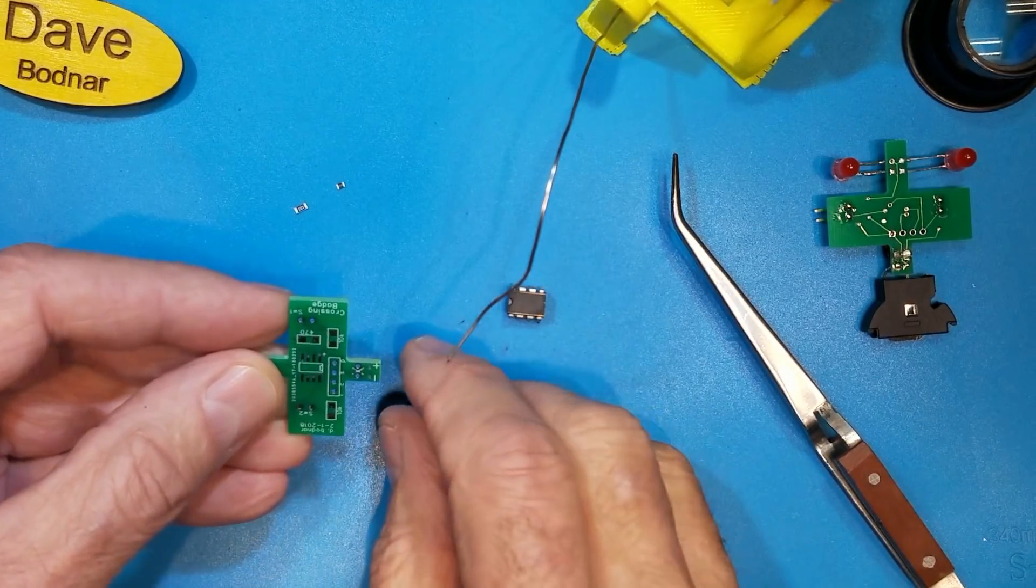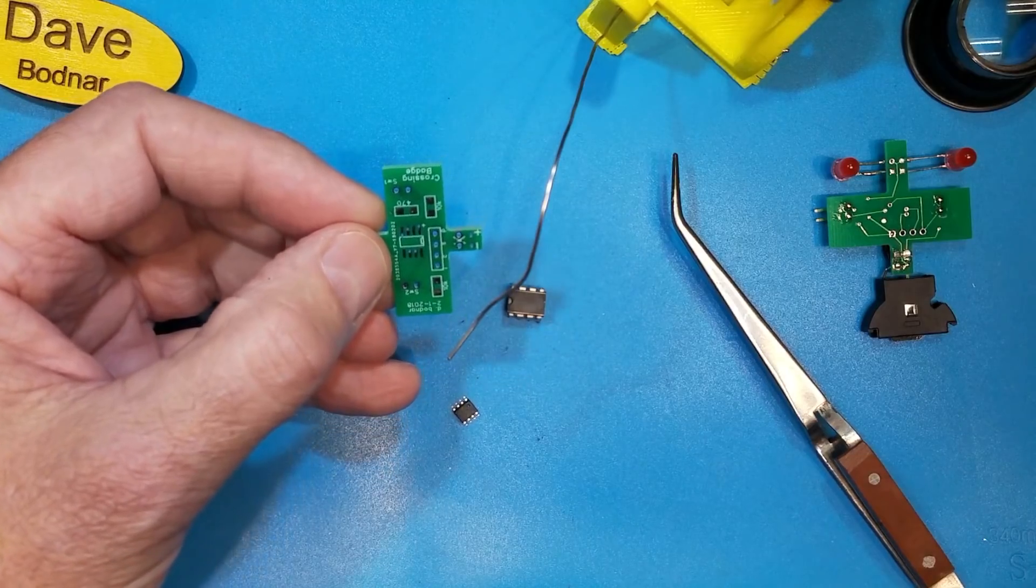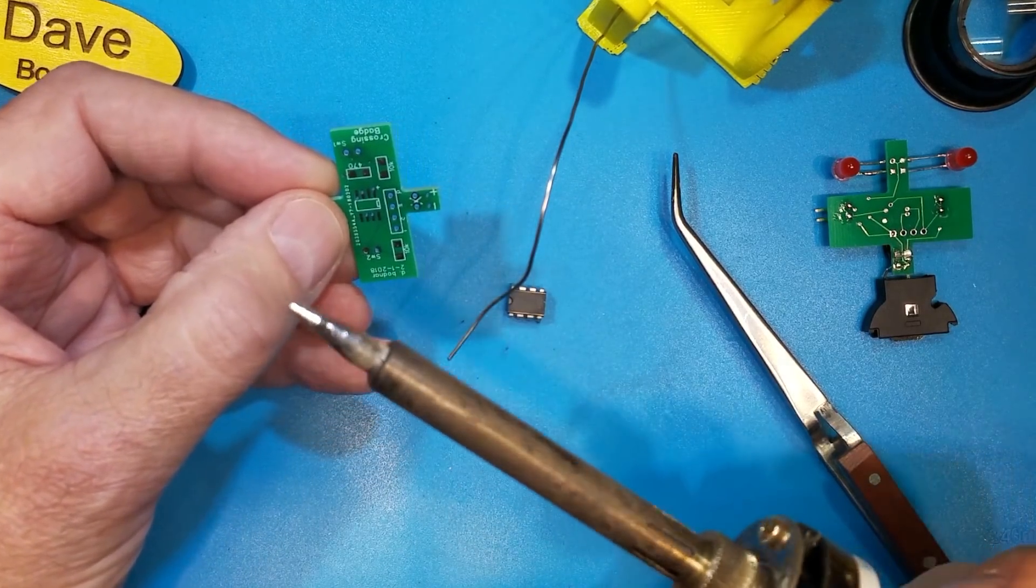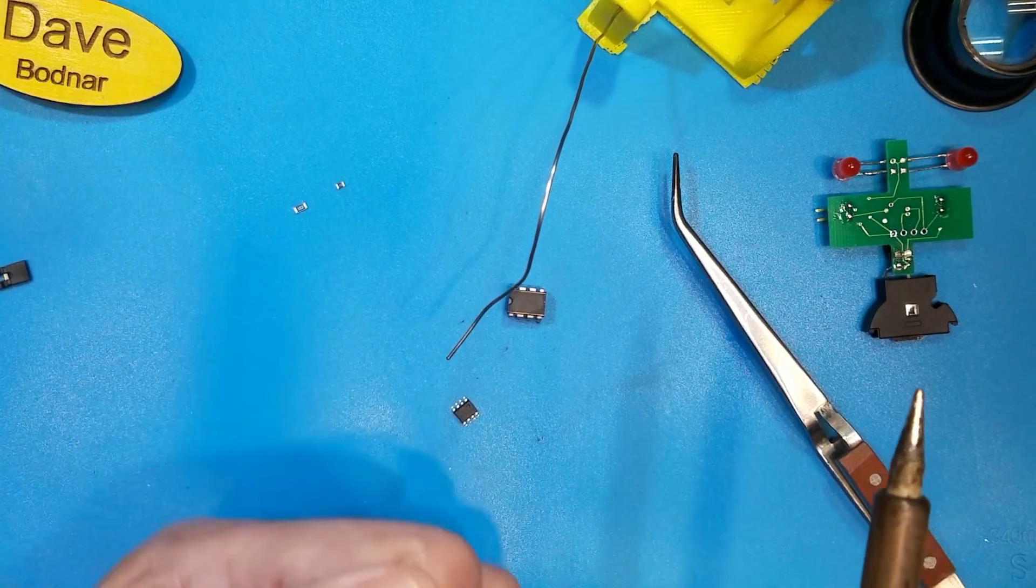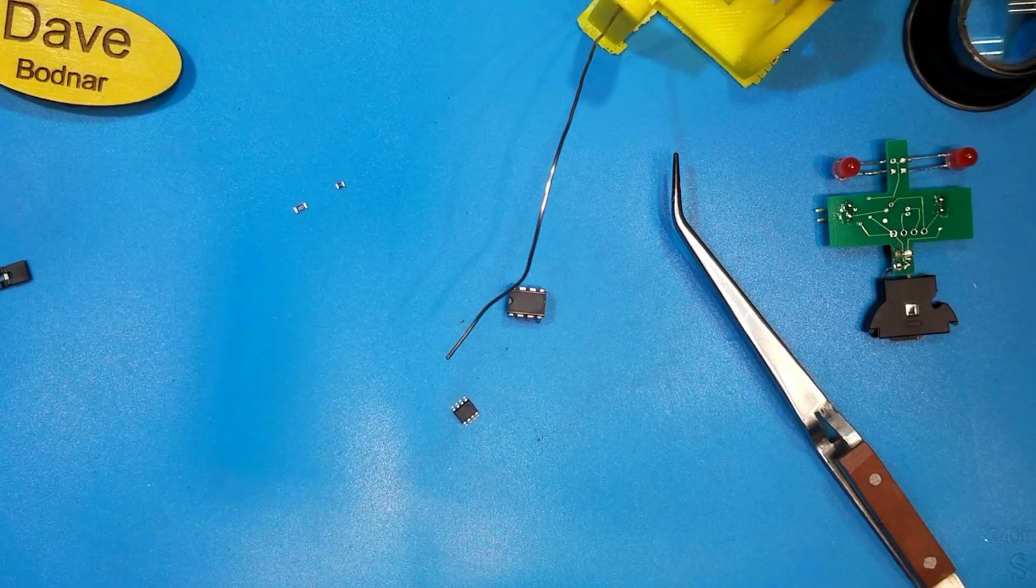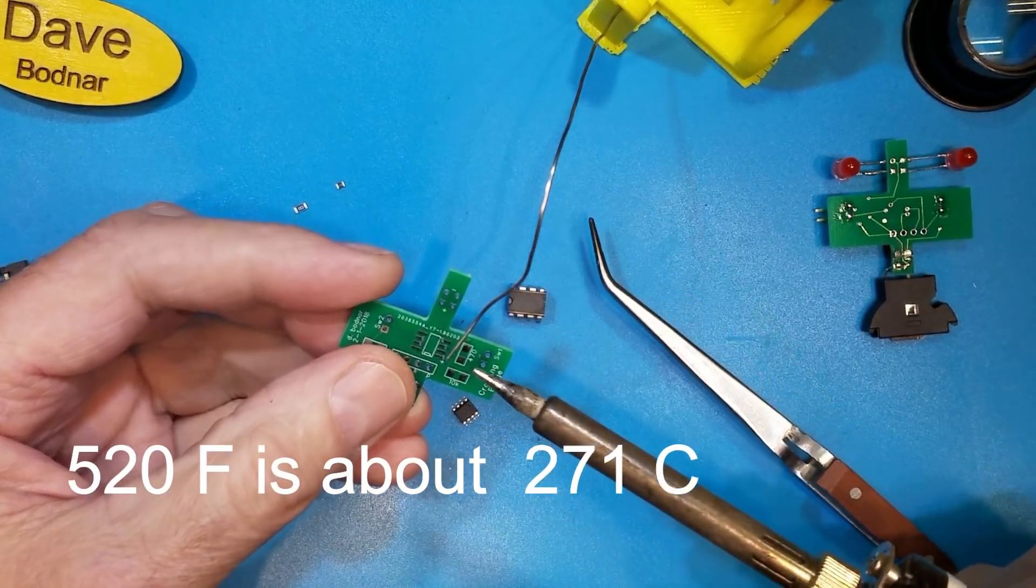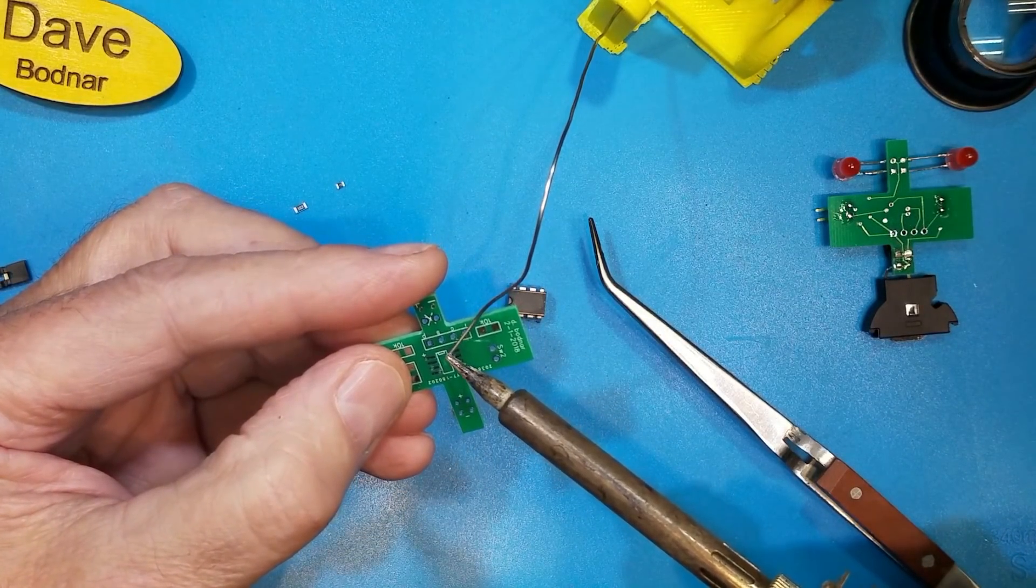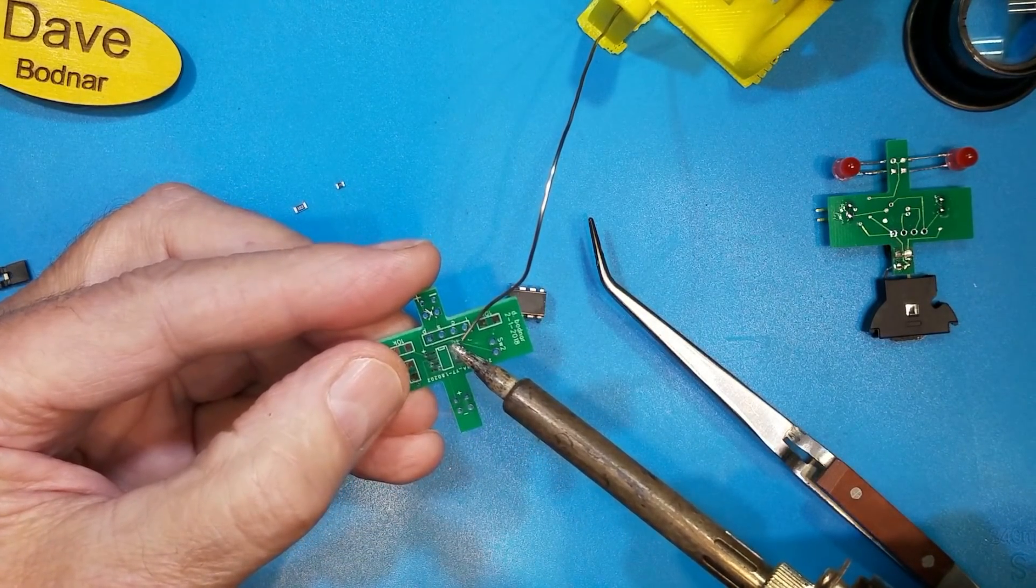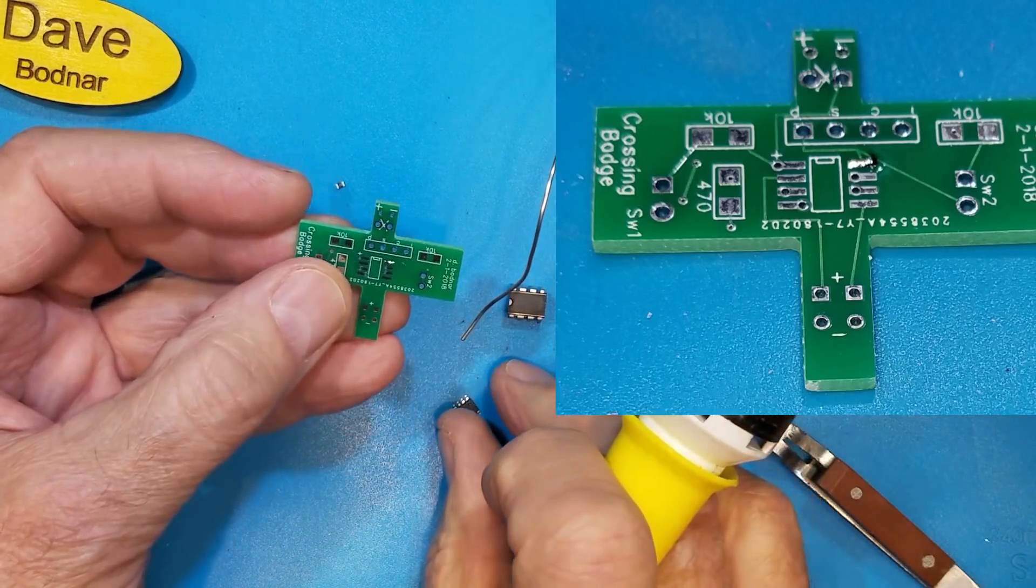Now the first step is soldering just a tad of solder on one of the pads. What I'm going to do is heat up my soldering iron. It's about 520 degrees Fahrenheit which is about 300 degrees C or thereabouts. And I'm going to put just a little drop of solder on, actually it's pin 8. It doesn't matter which one I do. I usually pick one of the corner ones. And tin that little spot.